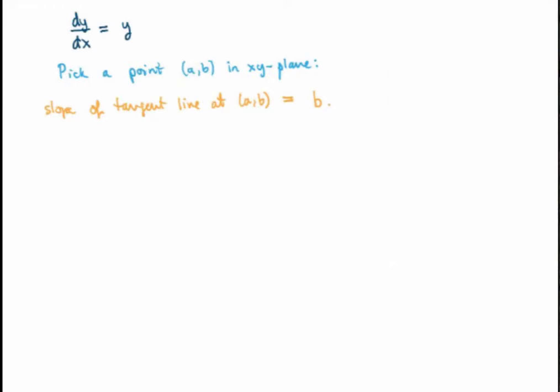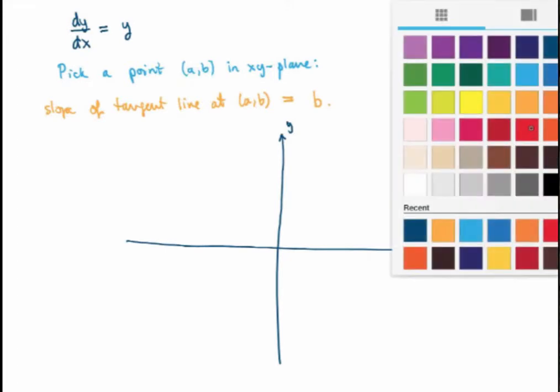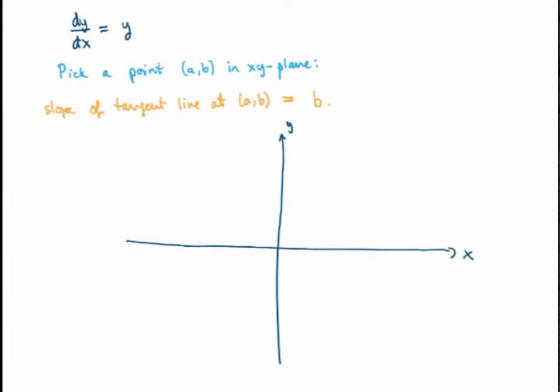The idea of slope field analysis is to take that and use this knowledge to get a better understanding of what the solutions will look like. Let me draw the xy plane. I'm going to pick some random points — starting with the origin. At the origin, the slope of the tangent line to solutions should equal the y-coordinate, which is 0, so the tangent line here will be horizontal. I'll draw a little line segment to remind me.